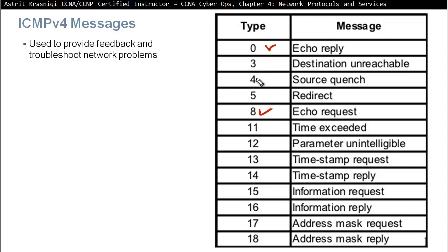Another ICMP message is Destination Unreachable. If for some reason a router cannot send a packet towards the destination, it replies to the sender with a Destination Unreachable message. There are different types — for example, Network Unreachable, Host Unreachable, or Protocol/Port Unreachable.